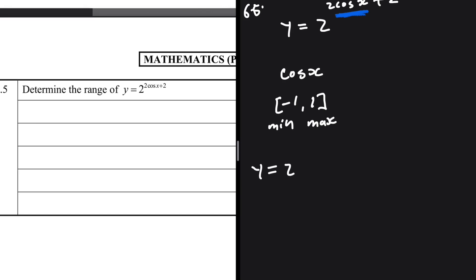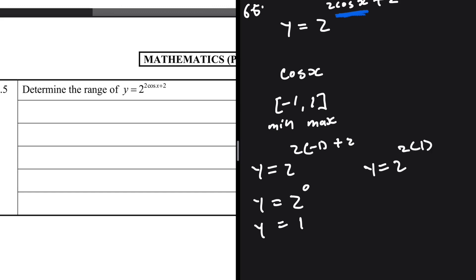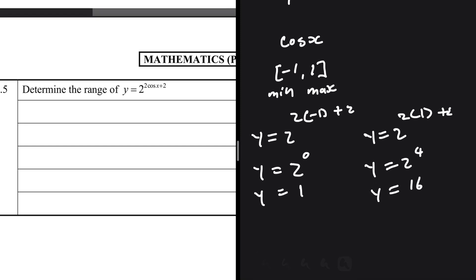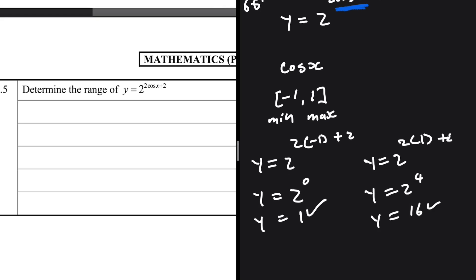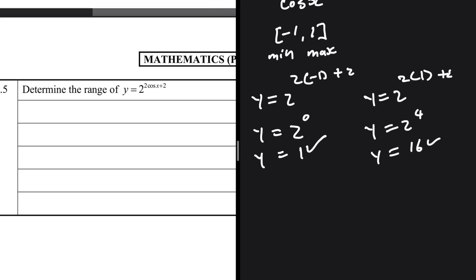At the minimum of cos(x) = -1: y = 2^(2(-1) + 2) = 2^(-2 + 2) = 2^0 = 1. At the maximum of cos(x) = 1: y = 2^(2(1) + 2) = 2^4 = 16. So the minimum value of y is 1 and the maximum is 16. Therefore, the range of y = 2^(2cos(x) + 2) is y ∈ [1, 16].